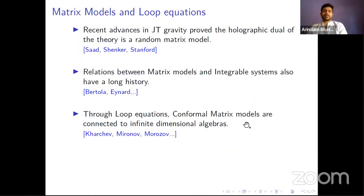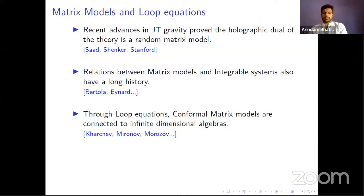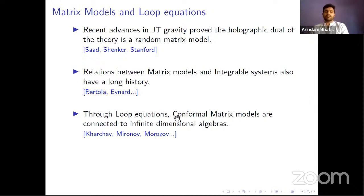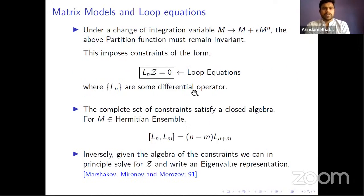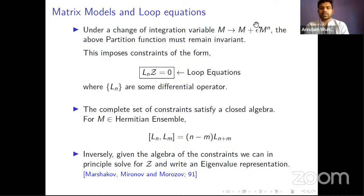Matrix models have been extremely important for holography. It was shown that the holographic dual of JT gravity is a random matrix model. There's been a lot of work relating matrix models to integrable systems, and through loop equations there's a special class called conformal matrix models connected to infinite dimensional algebras — this is the connection we explore in this talk. Loop equations arise because the partition function should remain invariant under a change of integration variables, and demanding that invariance puts constraints on the partition function, expressible as differential operators acting on it.